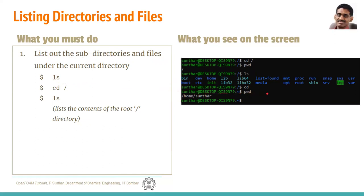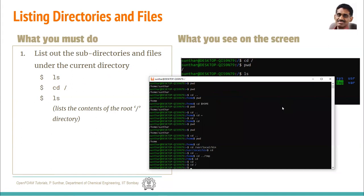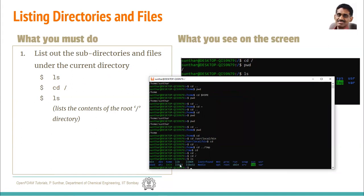Most Unix commands are shortened to two or three letters. 'ls' means list the files in the current directory. If I go to the root directory with 'cd /' and type 'ls', it shows all the files — home, etc, bin, usr, tmp — all the subdirectories of the root directory.